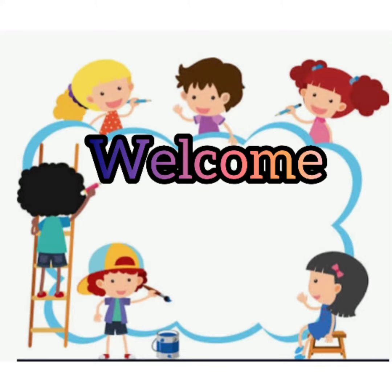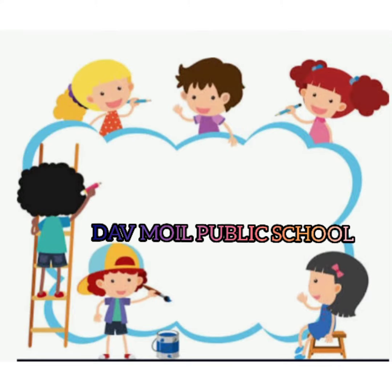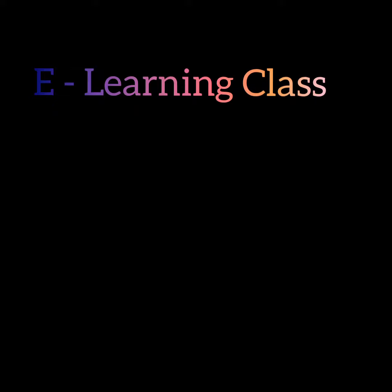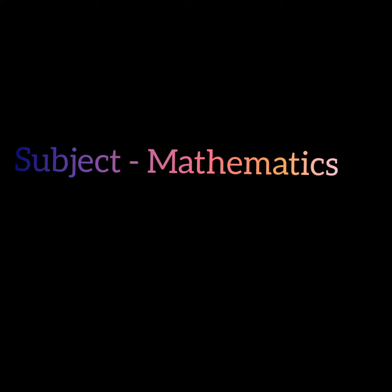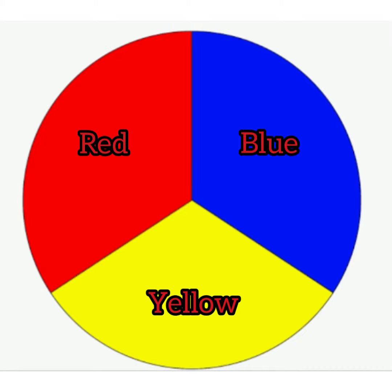Hello children, welcome to DAV Moil Public School e-learning classes of subject maths. Today we will discuss about red color. In the last video we learned about the introduction of primary and secondary colors. Red, yellow, and blue — these are the primary colors.